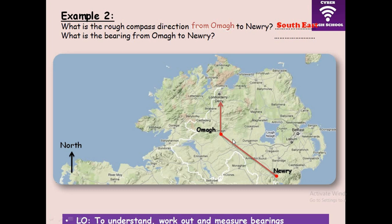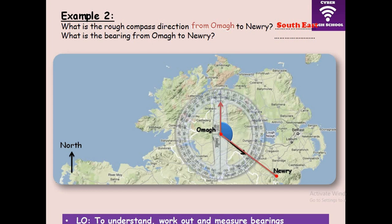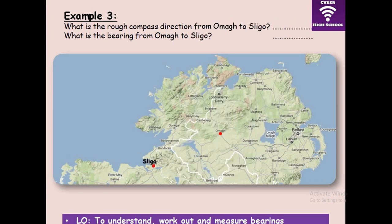An estimate would probably say around 120 degrees or thereabouts, but remember with bearing we have to use our instruments. So we measure this angle with the compass, and it is evident that this is 125 degrees.